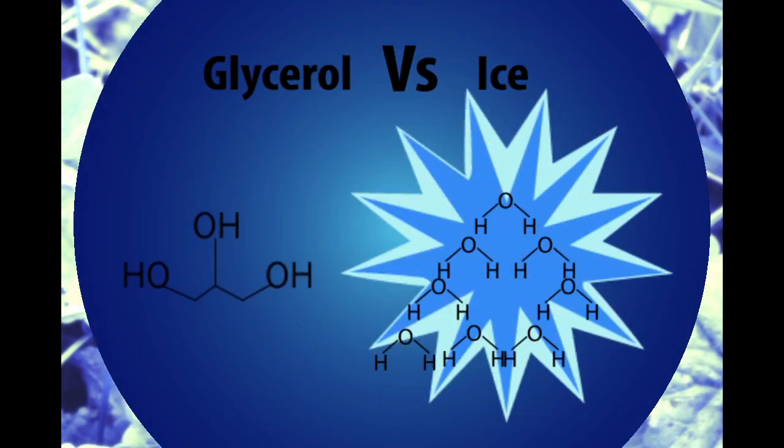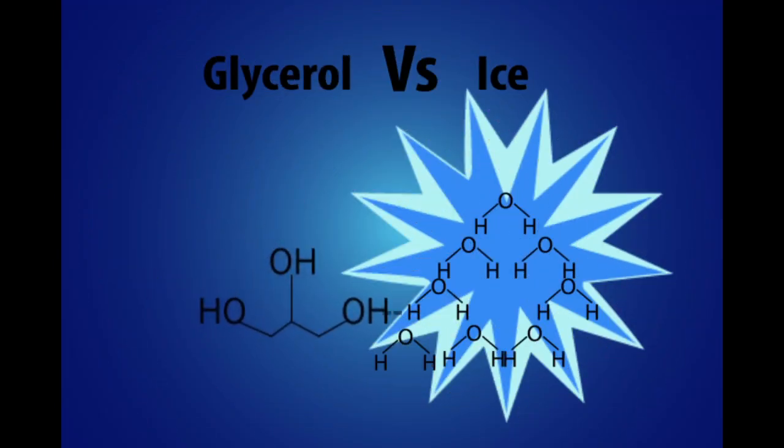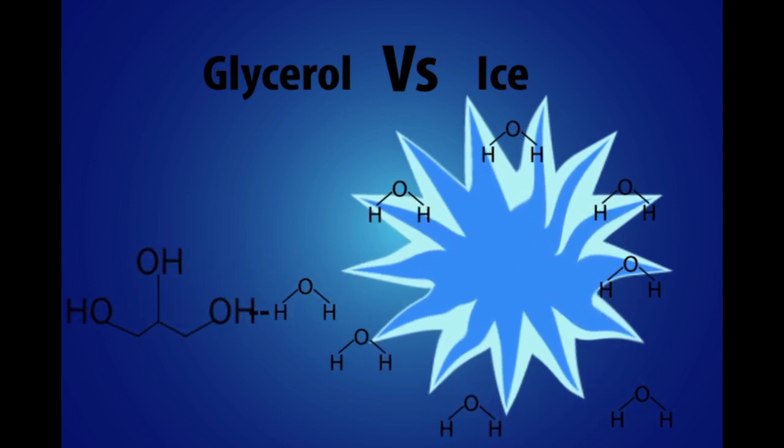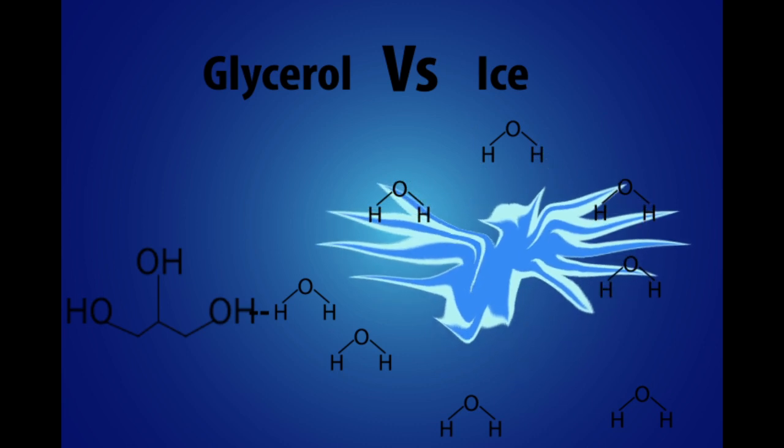Late in the fall, woolly bears produce glycerol in their tissues. Glycerol is an antifreeze, creating hydrogen bonds with water, preventing ice crystals from forming in the caterpillar's body.